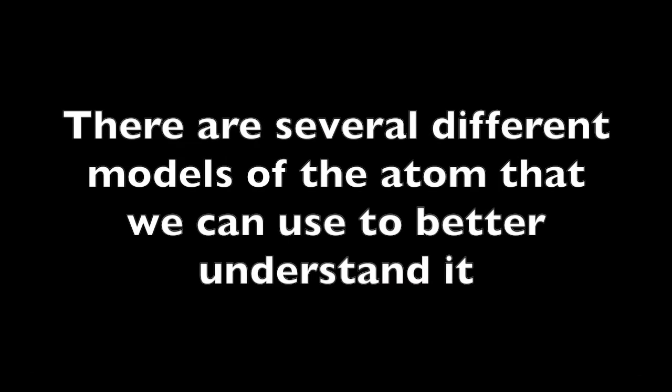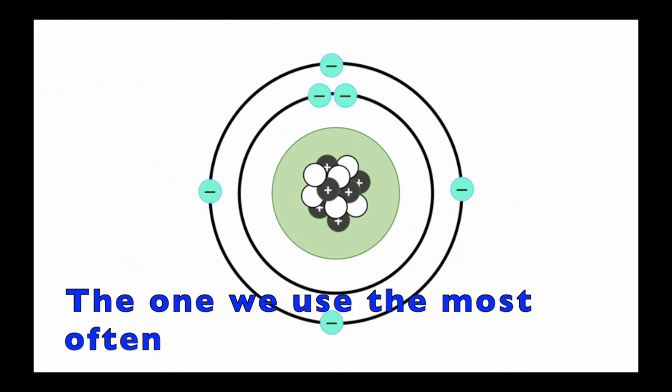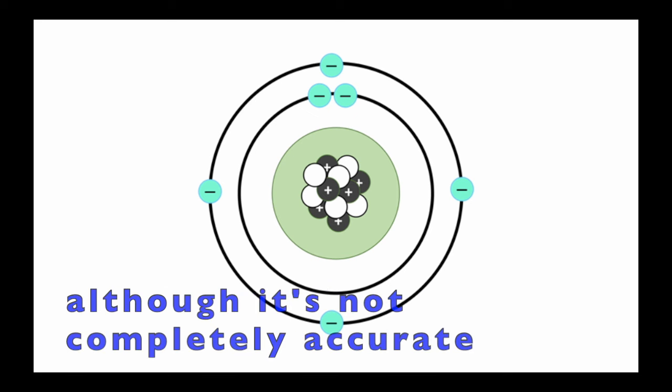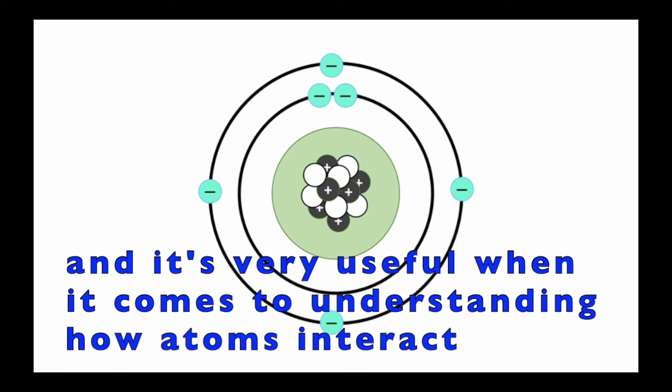There are several different models of the atom that we can use to better understand it. The one we use the most often is based on the Bohr model of the atom. And that model looks something like this. Although it's not completely accurate, it's easy to understand and it's very useful when it comes to understanding how atoms interact.